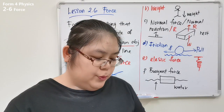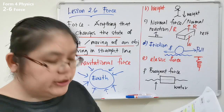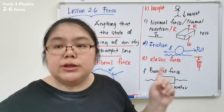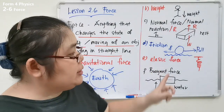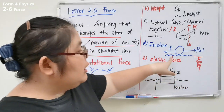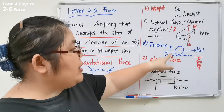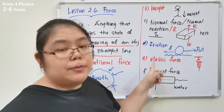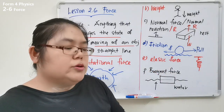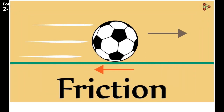When an object moves on a surface, we have another force called friction, also known as resistance. For example, if you pull a ball along an uneven surface, there is friction acting on the ball, causing it to slow down. We call this friction force.